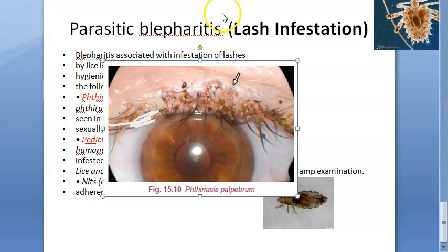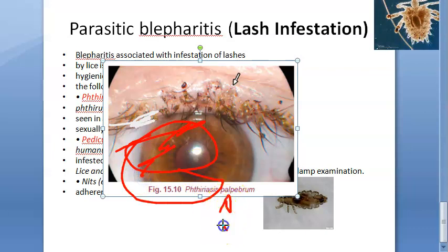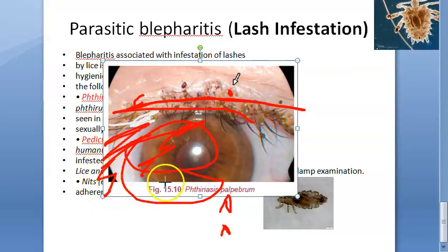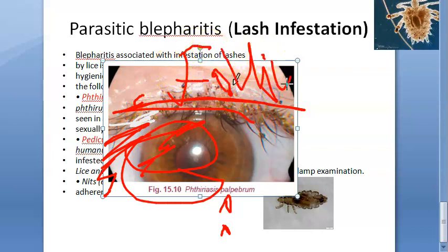Symptoms include chronic irritation, itching, burning, and mild lacrimation. Signs include red and inflamed lid margins. On slit lamp examination, lice anchoring the lashes with their claws may be seen, along with nits (eggs) appearing as opalescent pearls adherent to the base of the cilia. In long-standing cases, follicular conjunctivitis with follicles may be seen.